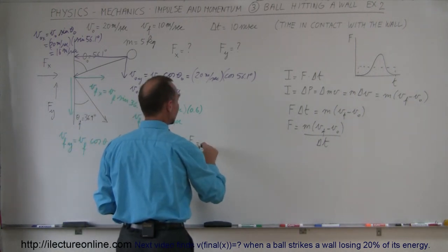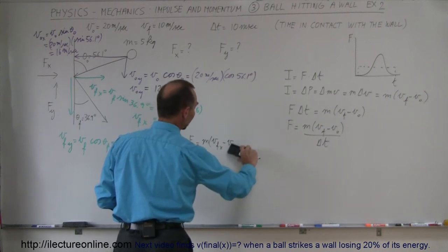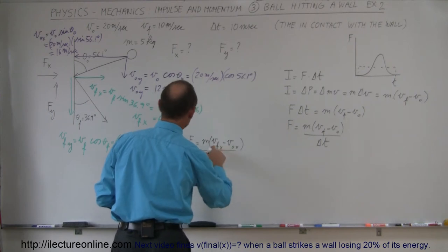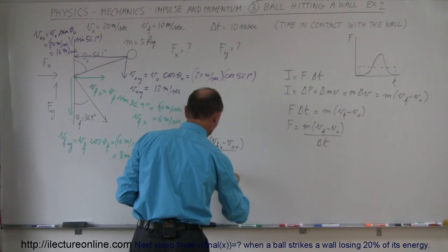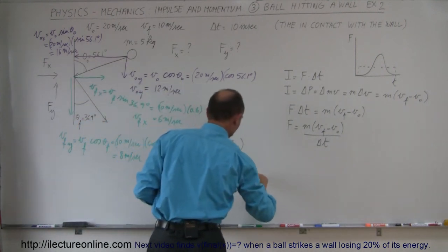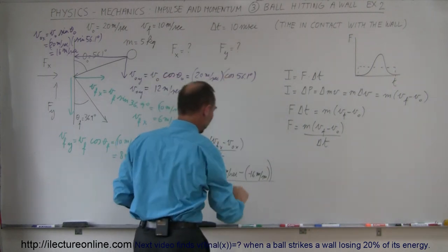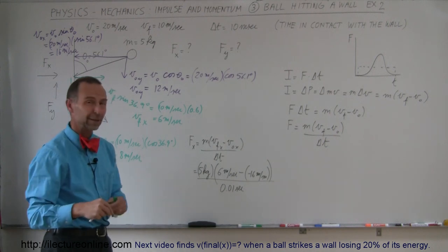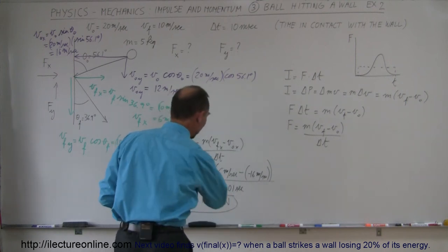Force in the x direction equals mass times (v final x minus v initial x) divided by the elapsed time. Plugging in: 5 kilograms times (6 meters per second minus negative 16 meters per second) divided by 0.01 seconds. Note that 10 milliseconds is one hundredth of a second. The two negatives cancel, so it's 6 plus 16 equals 22, times 5 is 110, divided by 0.01 — that's multiplying by 100 — giving 11,000 newtons in the x direction.